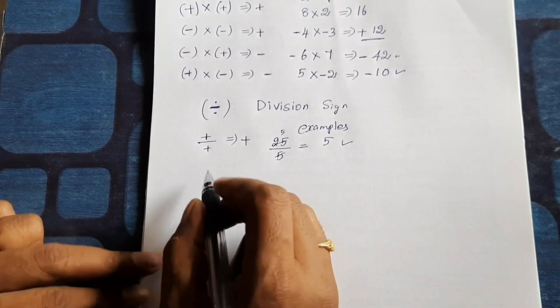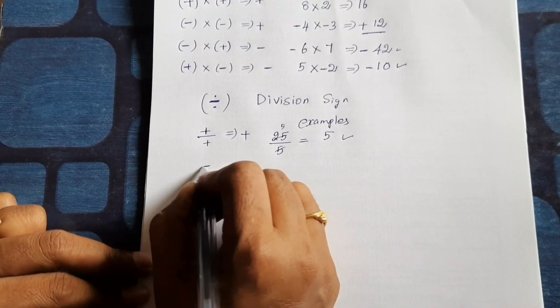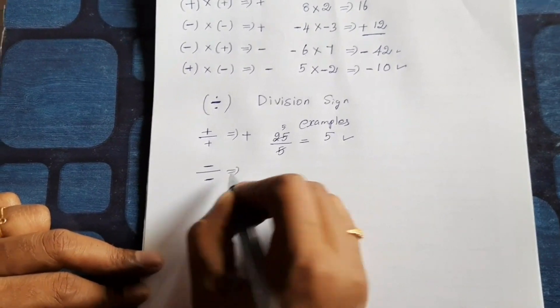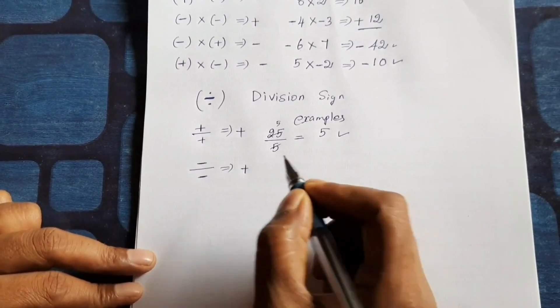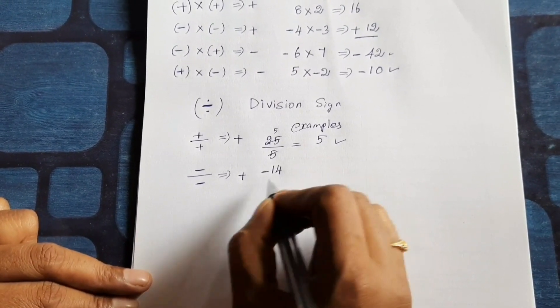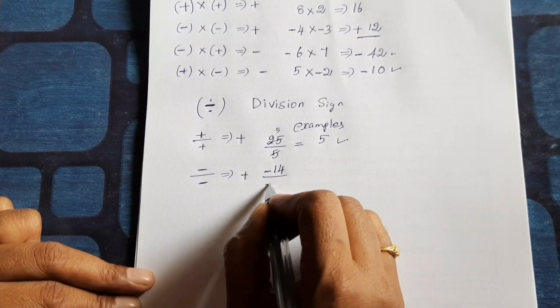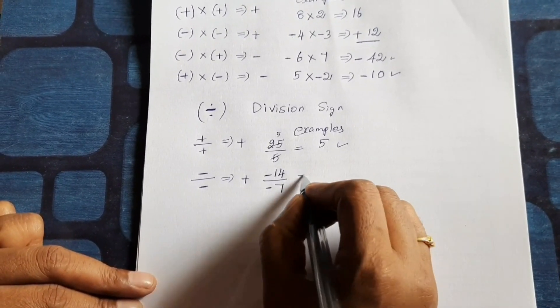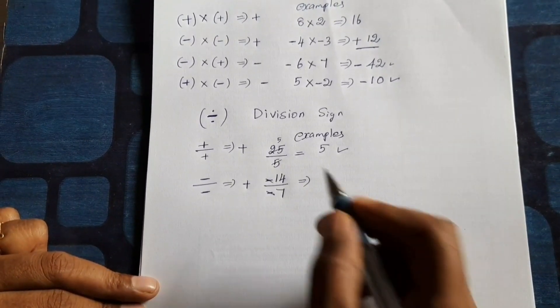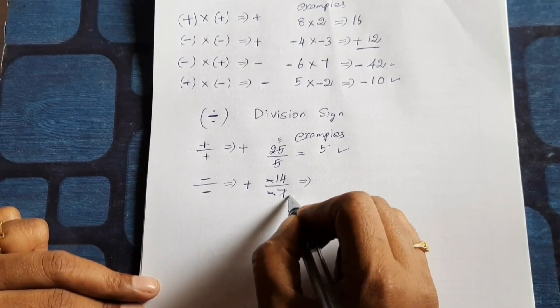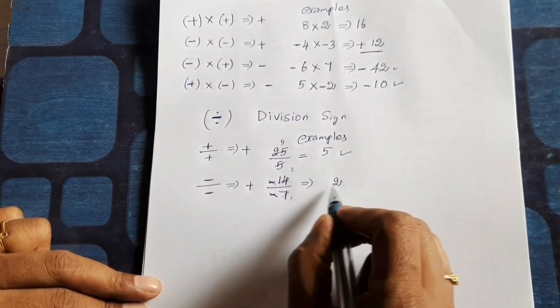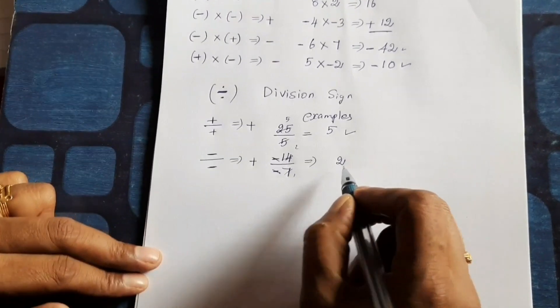Next, minus divided by minus gives plus, plus. For example, minus 14 divided by minus 7. It gives minus minus, minus minus cancel. So 1, 7 or 2, 7 or, 2. This is the positive number.